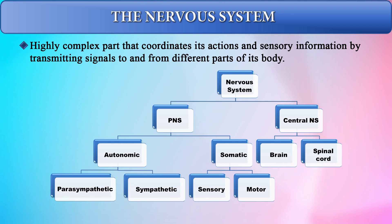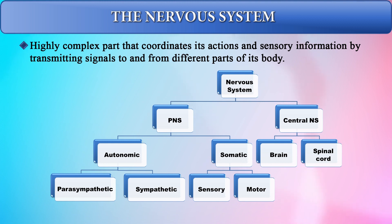The central nervous system can be further classified into the brain and the spinal cord. The peripheral nervous system can be classified into the autonomic and the somatic systems. The autonomic can be further classified into the parasympathetic and sympathetic, and the somatic can further be classified into the sensory and the motor.